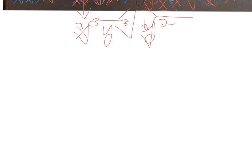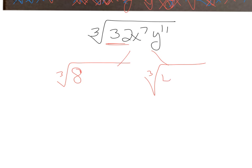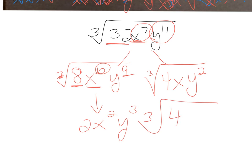Number eight: the cube root of 32 x to the seventh y to the eleventh. For 32, the largest perfect cube is 8, since 8 times 4 is 32. For x to the seventh, the largest perfect cube is x to the sixth times x. For y to the eleventh, the largest perfect cube is y to the ninth times y squared. So the cube root of 8 is 2, cube root of x to the sixth is x squared (6 divided by 3), cube root of y to the ninth is y to the third (9 divided by 3). The answer is 2x squared y to the third times the cube root of 4xy squared.